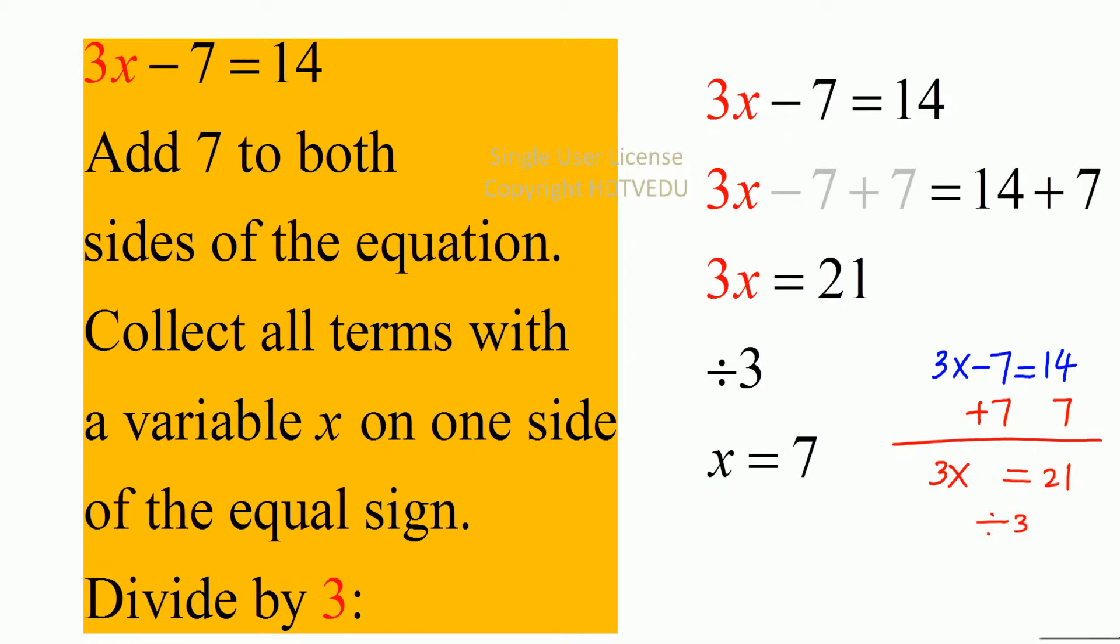Now use the division property and what do we get? 3x over 3 which is equal to x, and that is equal to 21 over 3, and that is equal to 7. So what do we get? x is equal to 7.